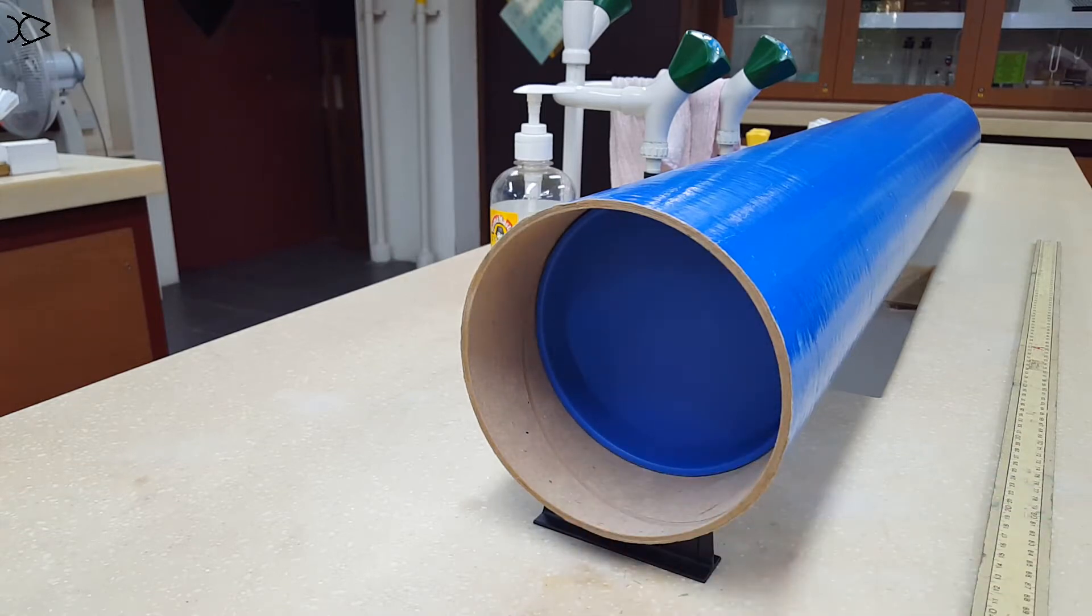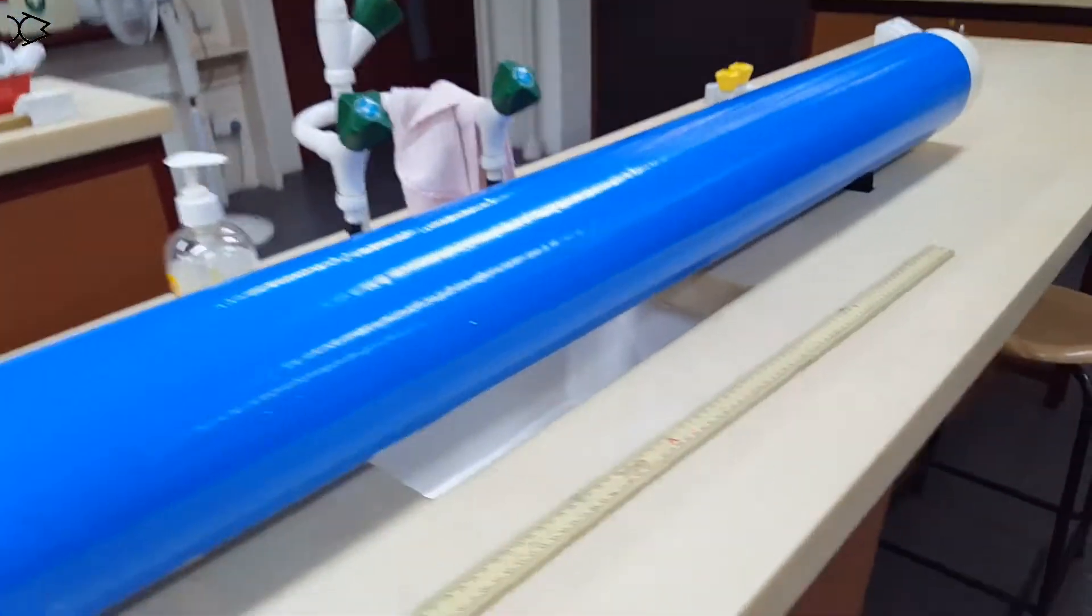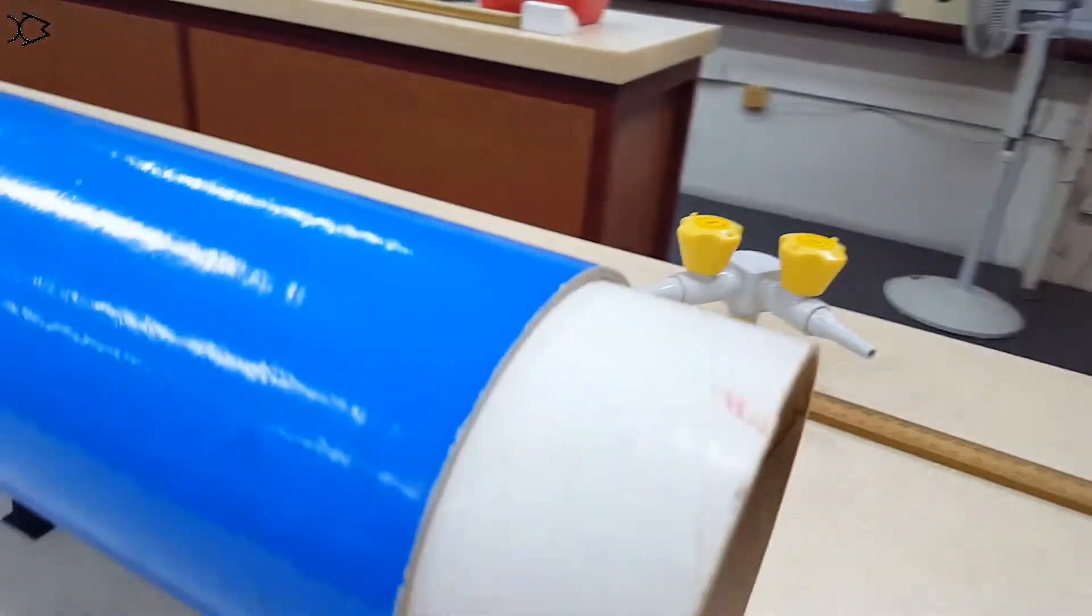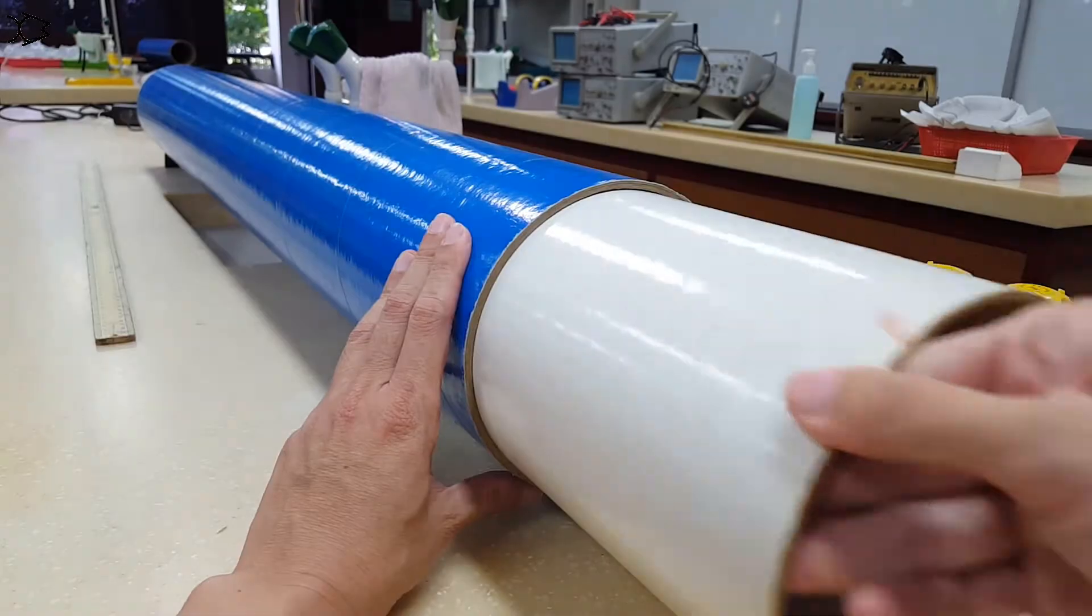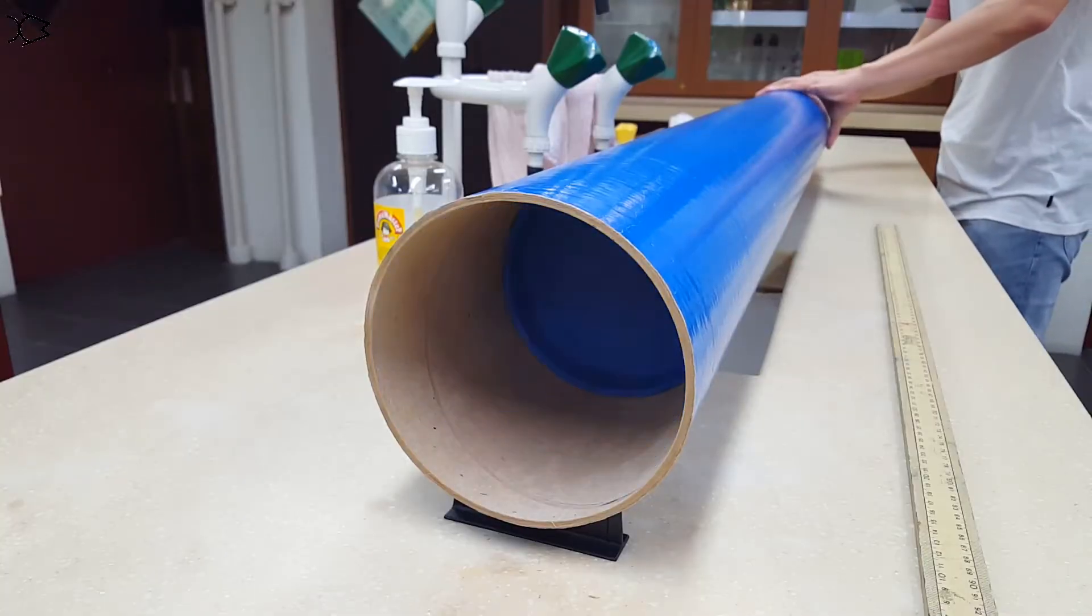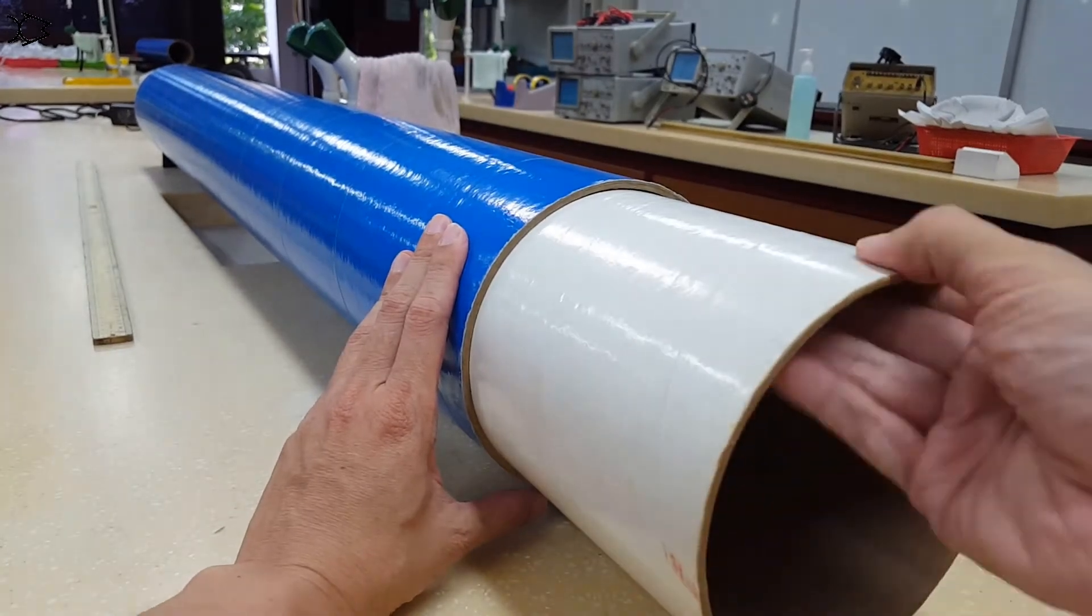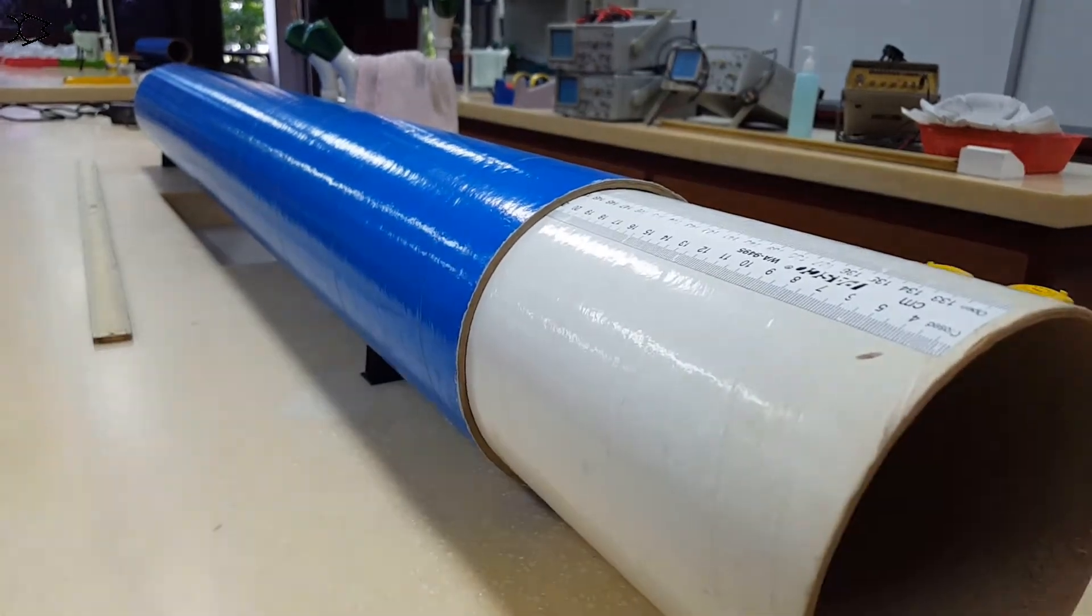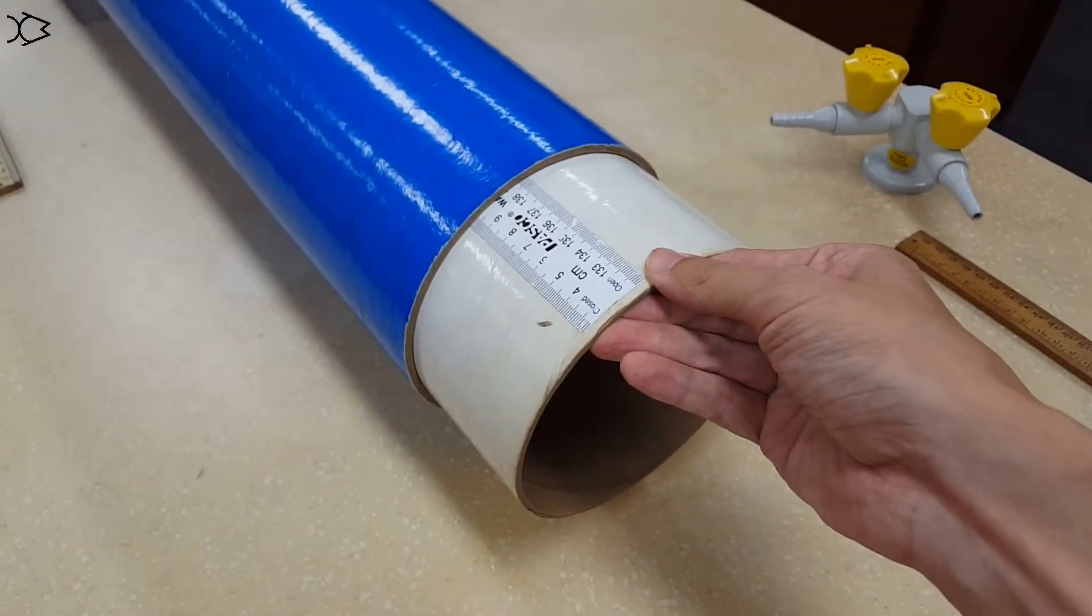And we can vary the length of the tube, meaning we can vary the distance from the open end to the closed end, by drawing this thing in and out of the tube. And there is even a scale here so that you know what is the length of your tube.